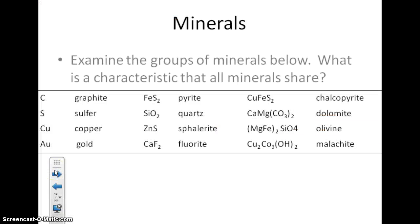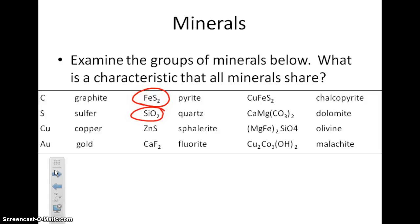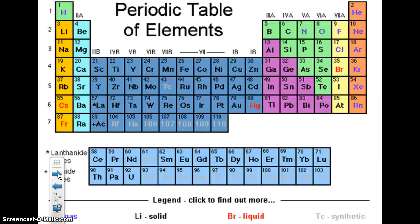So let's talk about minerals. Taking a look at this group of minerals, pyrite is going to be made of iron and sulfur. Quartz is made of silicon and oxygen. Sphalerite has zinc and sulfur — you'll see some overlap there. We've got carbon here, and calcium can be in a few different minerals. So certainly there is some overlap. All minerals are made of elements — that's going to be number one for you.